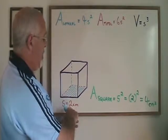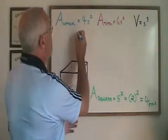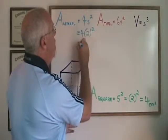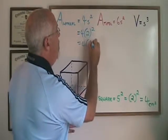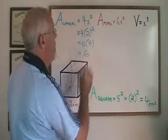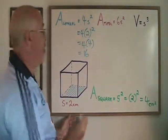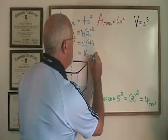If we plug the side length 2 into this formula, we get 4 times 2 squared, which is 4 times 4, which is 16. And because it is an area and the side length was in centimeters, it will be 16 centimeters squared.